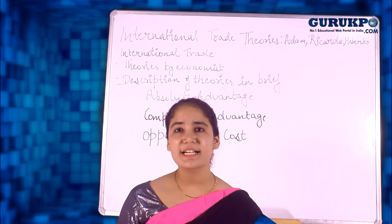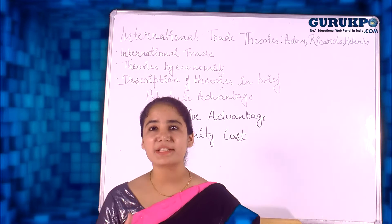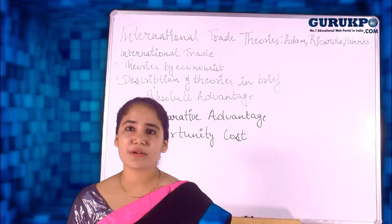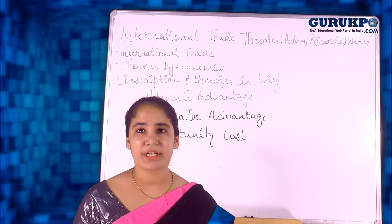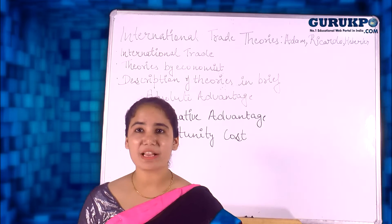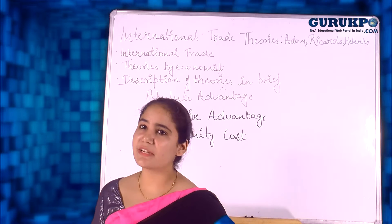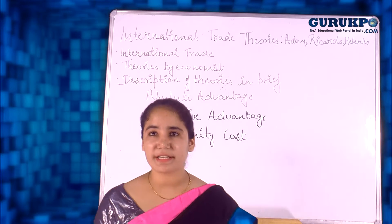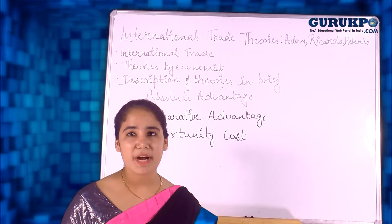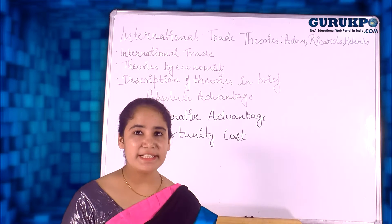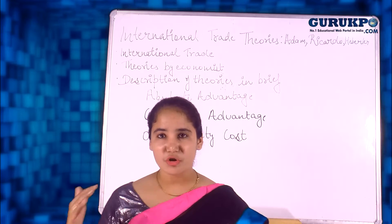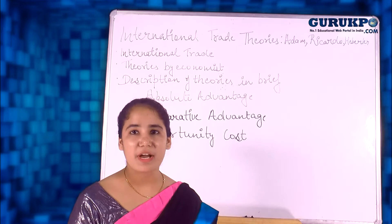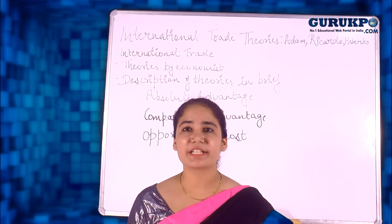How did classical economists come to make theories on international trade? In the 18th and 19th century, Adam Smith wrote his Wealth of Nations book in 1776, in which he talked about the international trade system. European nations started realizing that they could not survive alone and needed to take help through international trade.